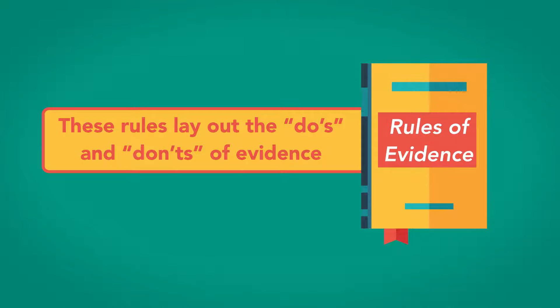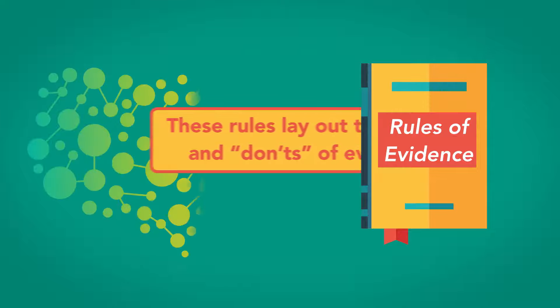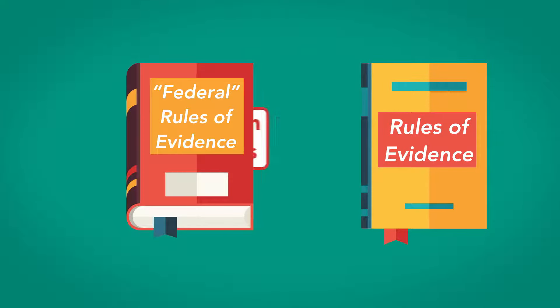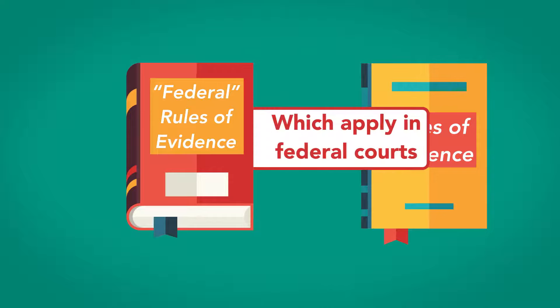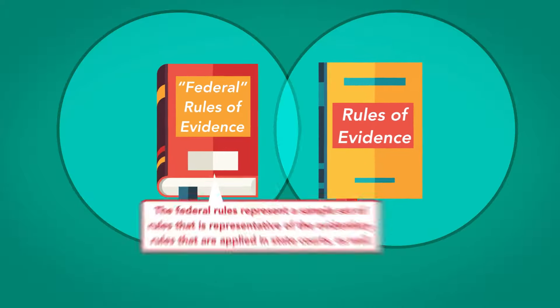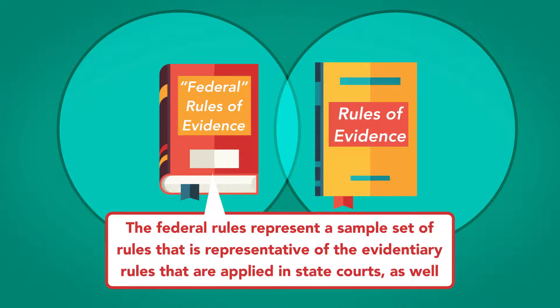These rules lay out the do's and don'ts of evidence. Every state has its own version of its rules of evidence, though there are also the federal rules of evidence which apply in federal courts. While differences exist, the federal rules represent a sample set of rules that is representative of the evidentiary rules applied in state courts as well.